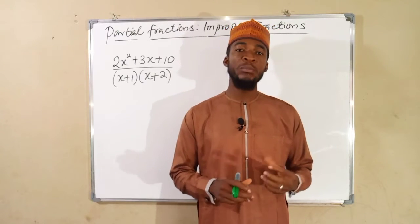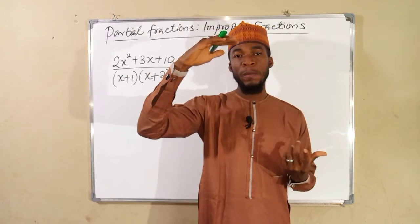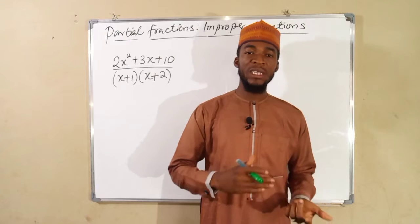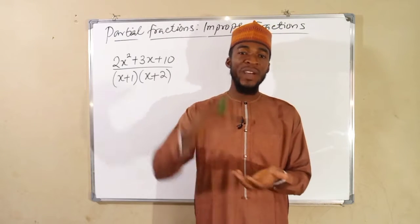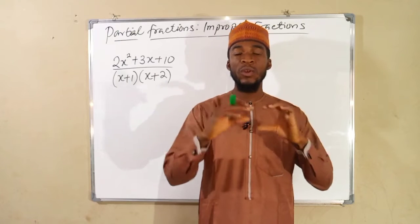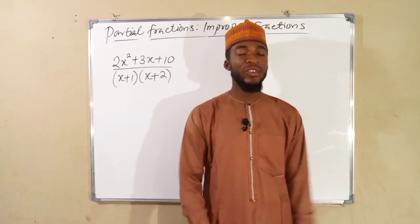An algebraic fraction is said to be improper if the degree of the top, which is the numerator, is the same or greater than the degree of the denominator. In that case, we have to divide the numerator by the denominator using long division before we go on to split our fraction into partial fractions.